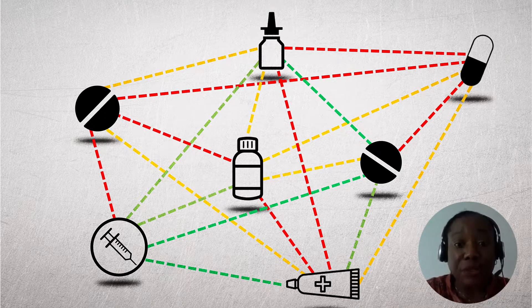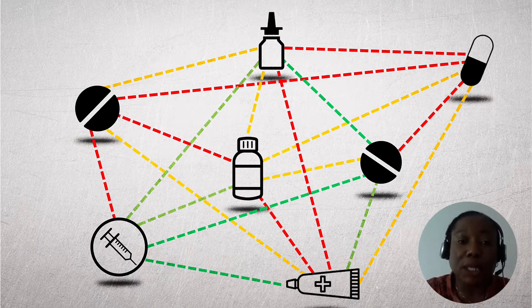We used ondansetron as the model compound, primarily because it's commonly given to cancer patients for anti-nausea, meaning it will be taken alongside other drugs used for cancer chemotherapy. Depending on how those other drugs are eliminated, there's potentially a DDI risk when the two drugs are taken at the same time. We wanted to explore the DDI liability for ondansetron, either as a victim — wherein another drug affects its metabolism — or as a perpetrator, wherein ondansetron itself affects the metabolism of the co-administered drug.